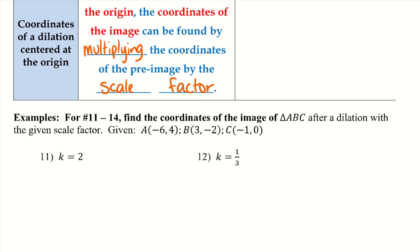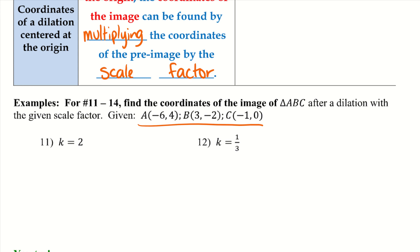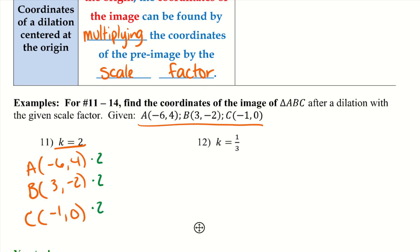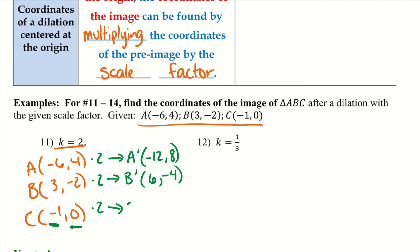Examples 11 and 12 use the same points A, B, and C with different scale factors. For example 11, with scale factor 2: A is (-6, 4), B is (3, -2), C is (-1, 0). Multiplying all coordinates by 2 gives A prime as (-12, 8), B prime as (6, -4), and C prime as (-2, 0). Note that 0 times 2 is still 0, so that coordinate stays the same.